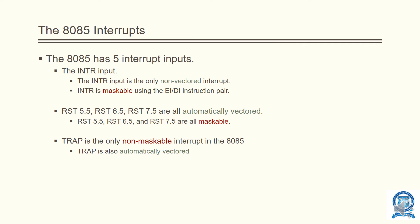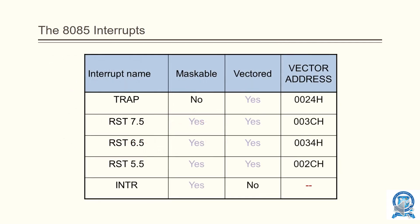The vector address of each interrupt has been tabulated here. You can see that the only non-maskable interrupt is TRAP and the only non-vectored interrupt is INTR. The corresponding addresses for the various interrupts are shown in this table.